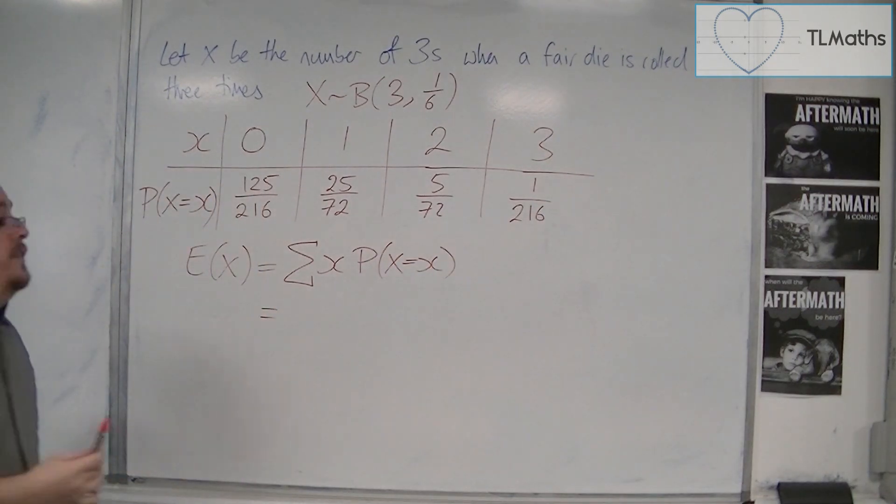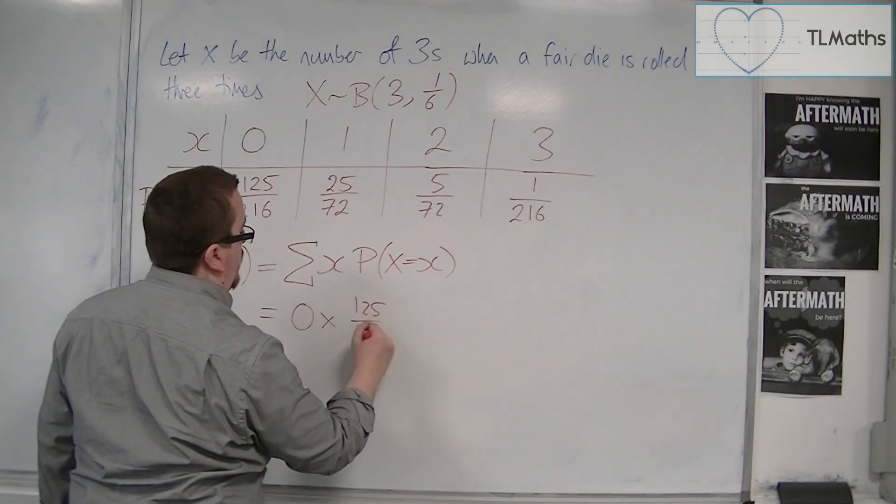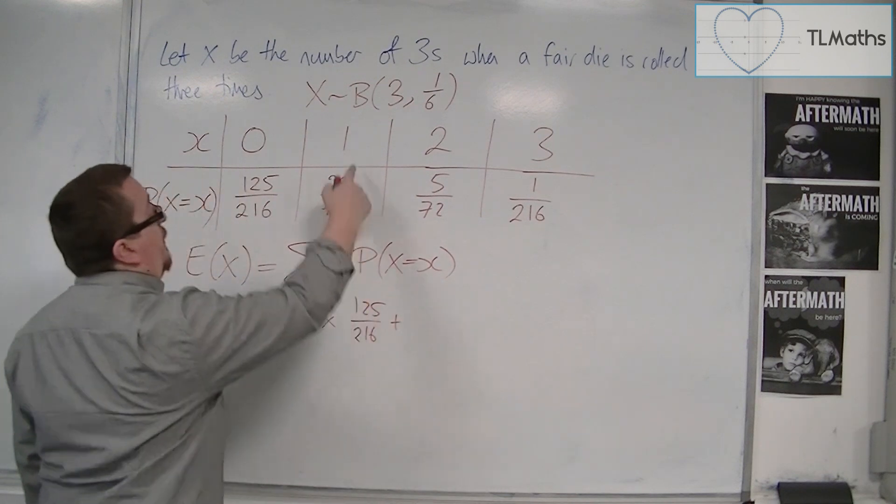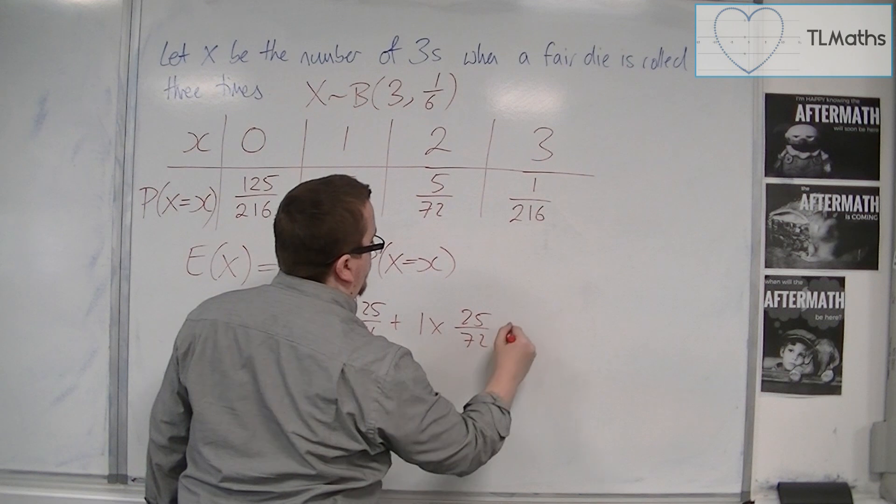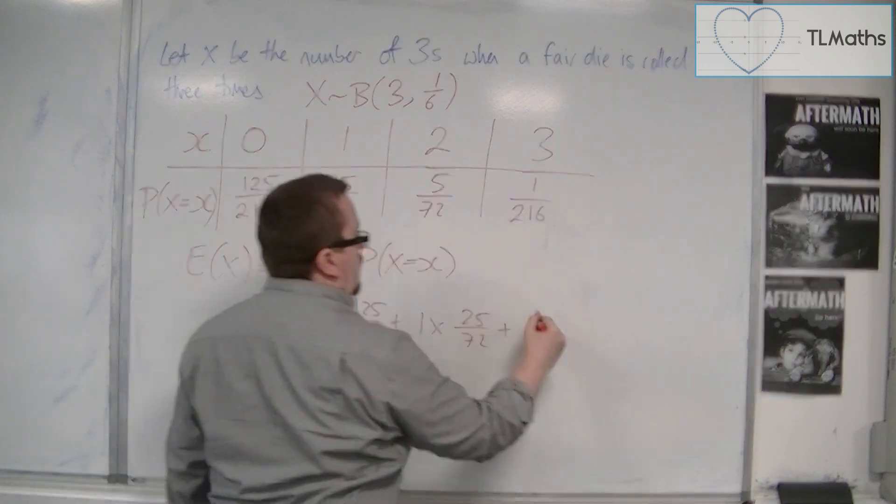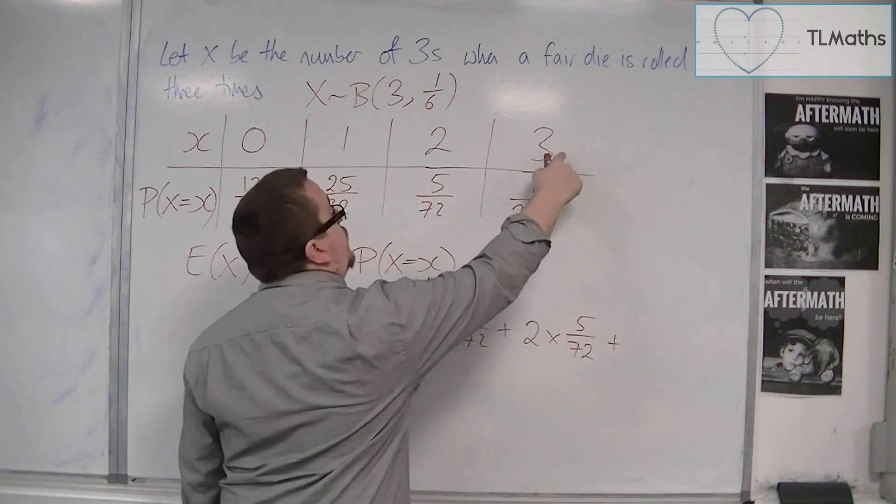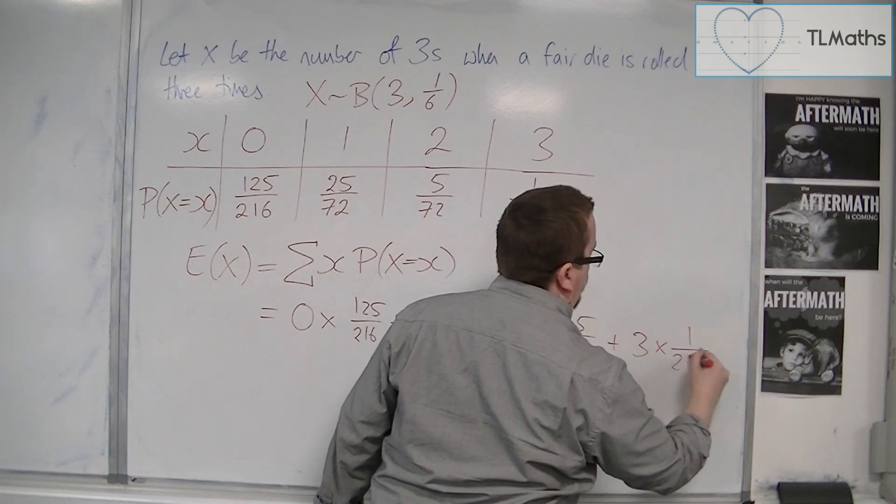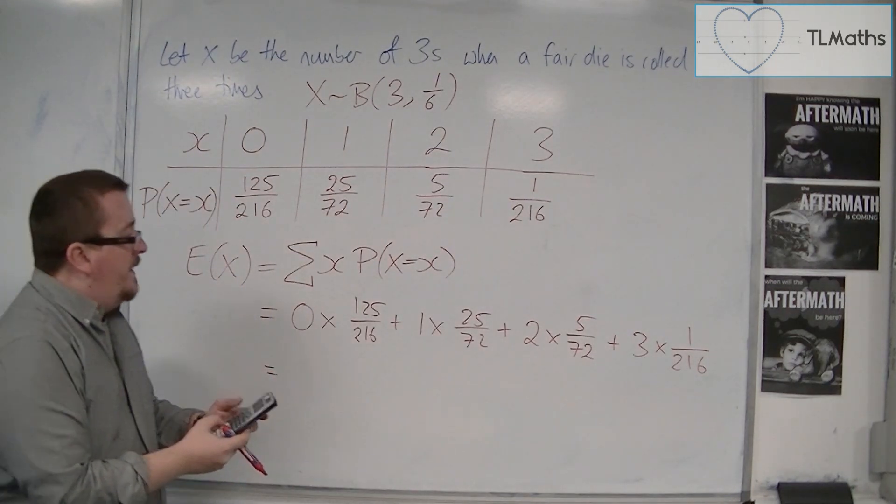So this is 0 times 125 over 216, plus 1 times 25 over 72, plus 2 times 5 over 72, plus 3 times 1 over 216. So we could work this out.